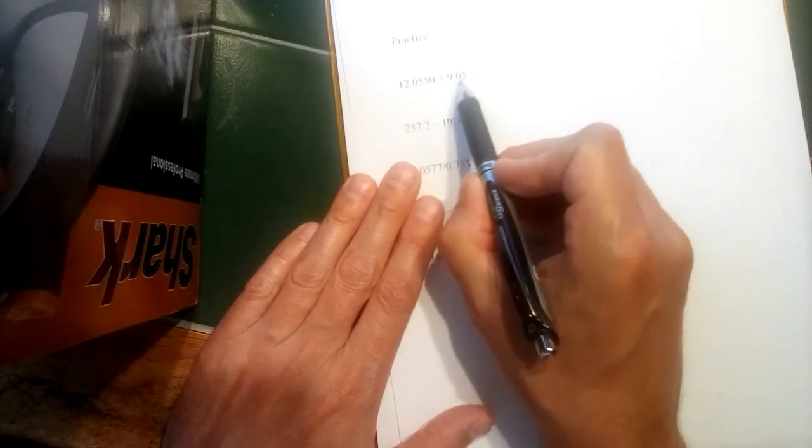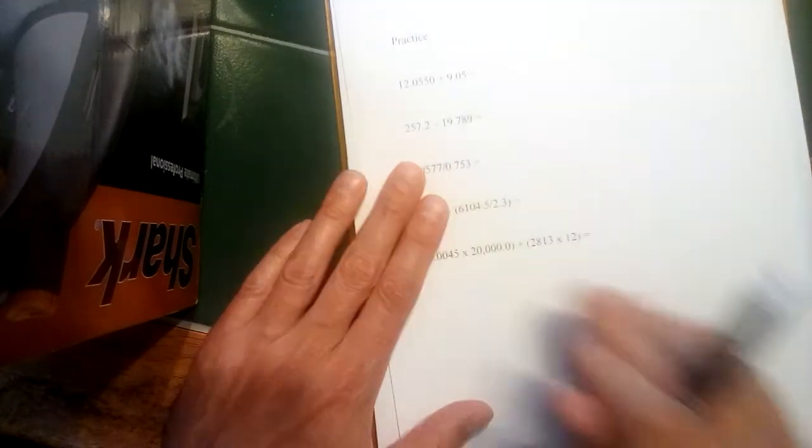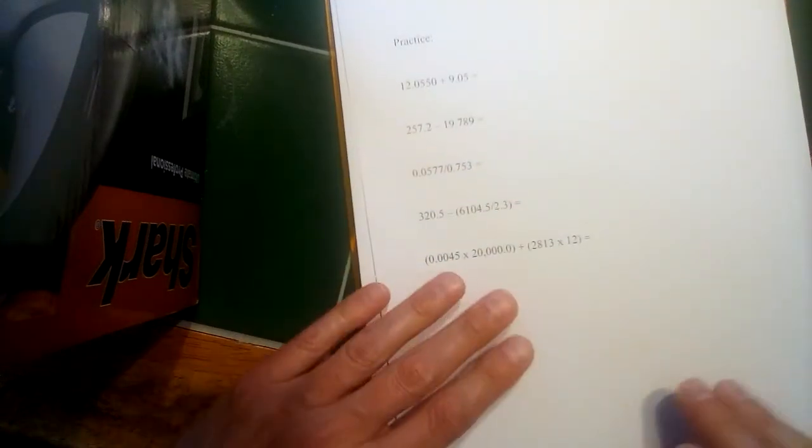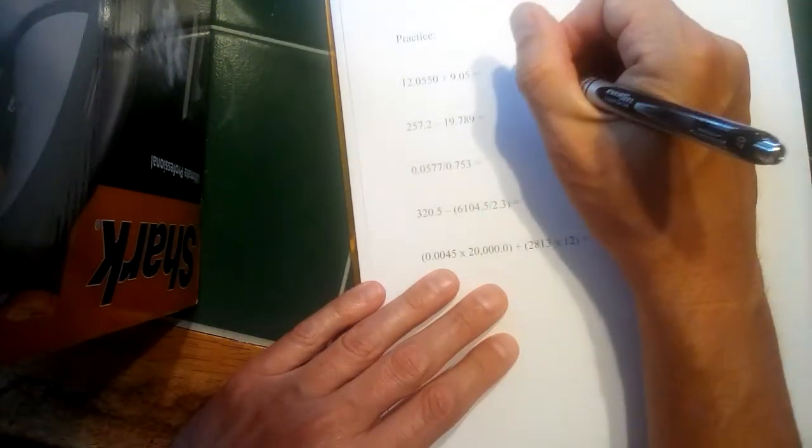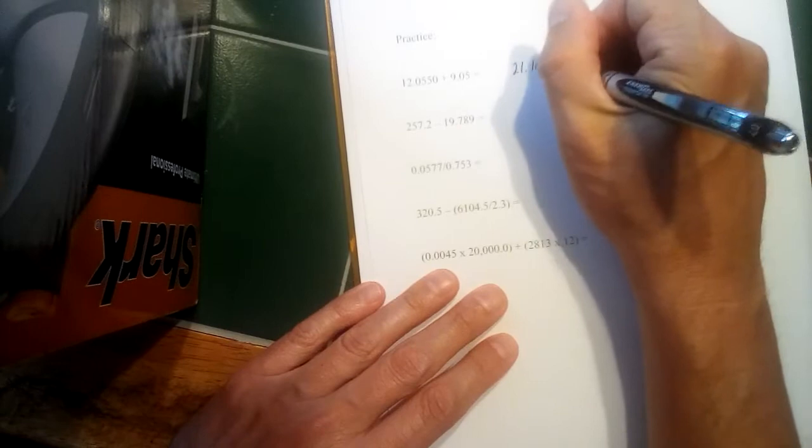And that means our answer is going to be limited to two places past the decimal. So if I add these together, 12.0550 plus 9.05, what I get on my calculator is 21.105.